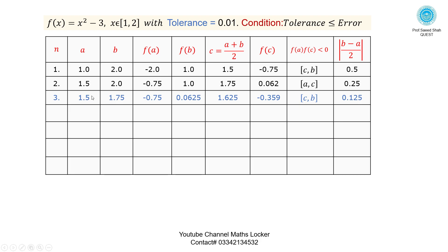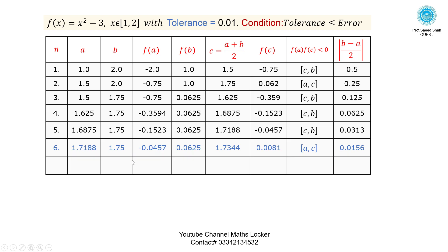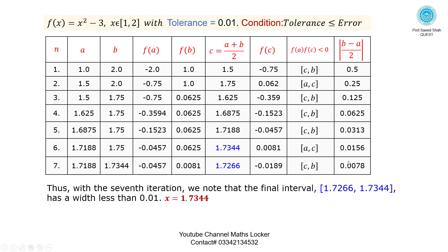Similarly, we take the third, fourth, fifth, sixth, and seventh iterations. We stop the loop at the seventh iteration because the stopping condition is: tolerance ≤ error. Tolerance is 0.01. At a certain iteration the condition is true, but at the seventh iteration, the error becomes 0.007. Since 0.01 is not less than or equal to 0.007, this condition is false, so we stop the loop. The larger c value at that point is the root.